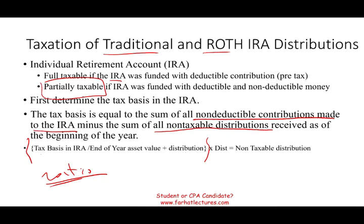How do you find the ratio? Your tax basis in the IRA — and year after year this tax basis will go down because as you are receiving distributions, part of it will be the basis — is divided by the end-of-year asset value plus the distribution. You find this ratio, and the ratio represents the non-taxable portion of the distribution. You take this ratio multiplied by the distribution amount — that's what you have to do.